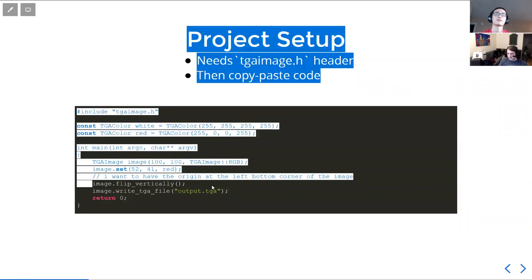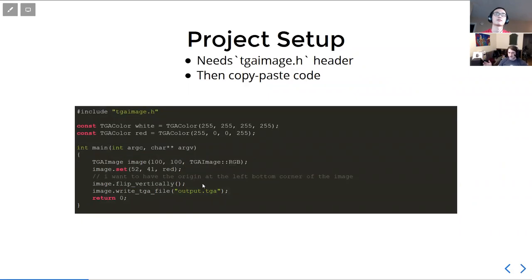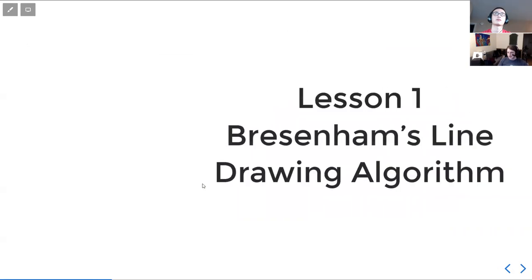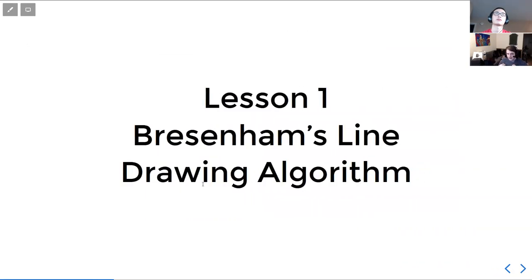We flip the image vertically because we want the coordinate frame to start from the bottom, not the top — so zero-zero is at the bottom. The result should look like a red dot on a black background, and that's literally everything for setup.